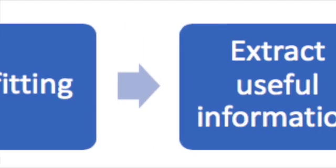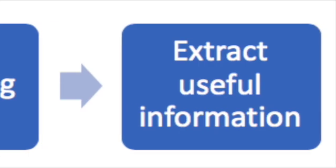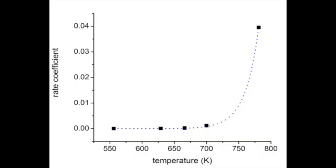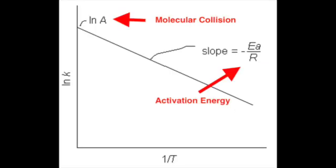we can often extract useful information about the system that we are studying. An example of this is that linearizing the exponential function that relates reaction rate as a function of temperature gives us information about the reaction's activation energy and its requirement for molecular collision.